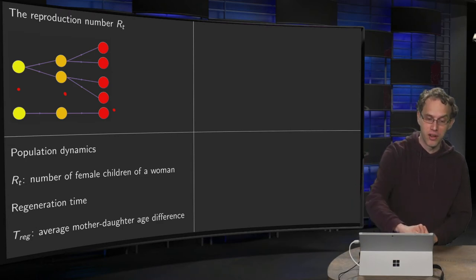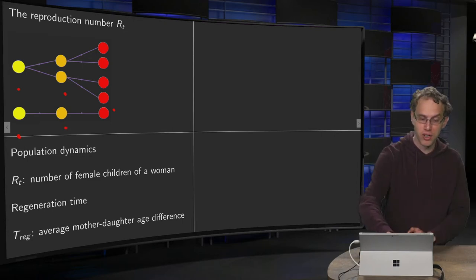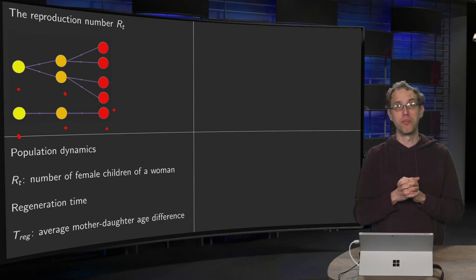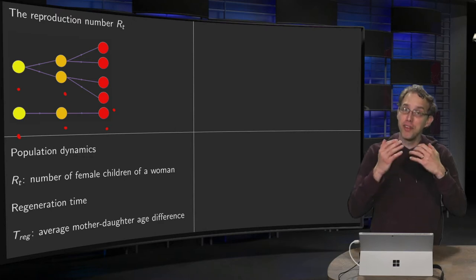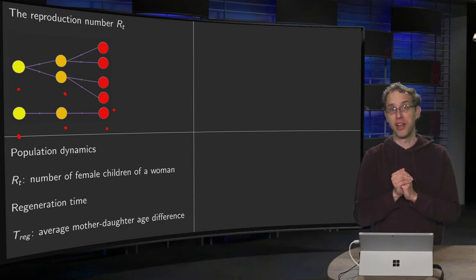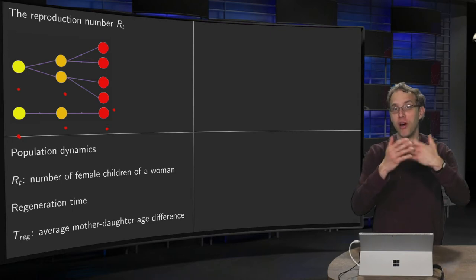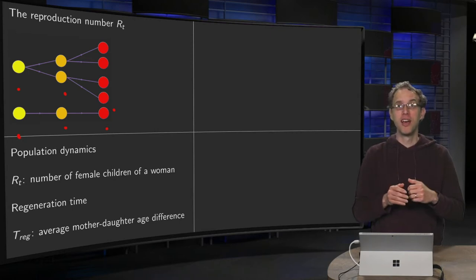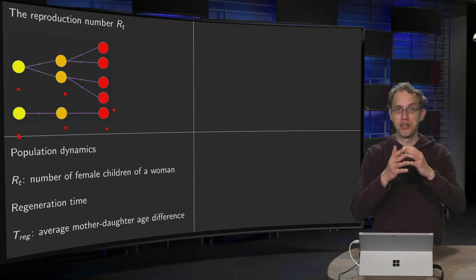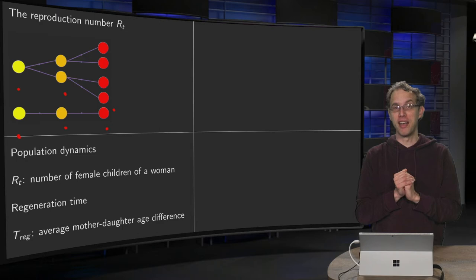Whereas if the mother has only one daughter, and this daughter has one daughter, then after two generations, we still have one woman in the population. So what is the idea of this reproduction number? It tells us how many female children a woman has on average. We are only talking in this population dynamics about females. Males are not so important here. They are considered to be enough men available to do their job. So in population dynamics, we are looking at the number of women all the time.